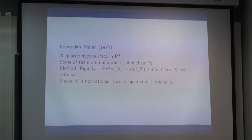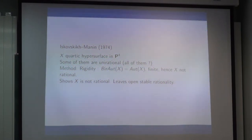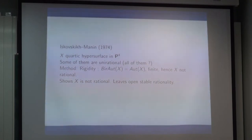The second method was by Iskovskikh and Manin. They proved that for any smooth quartic hypersurface in P⁴, the group of birational automorphisms — those which might have exceptions — in fact has no exceptions. Any birational automorphism is an automorphism, and the group of automorphisms of a smooth quartic surface is a finite group. That is a big difference from projective space, where you have the Cremona group which is enormous. So that implies x is not rational, but again this method doesn't disprove stable rationality.